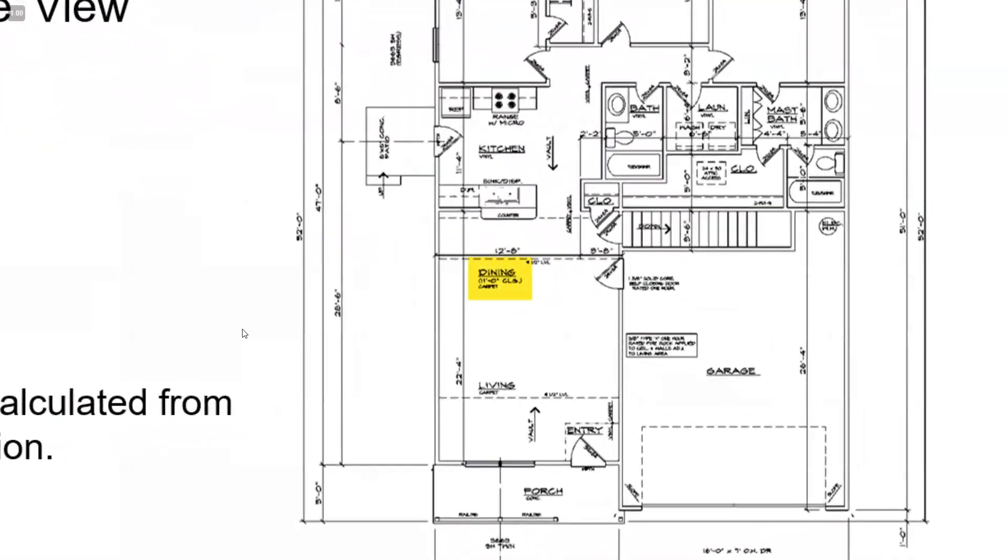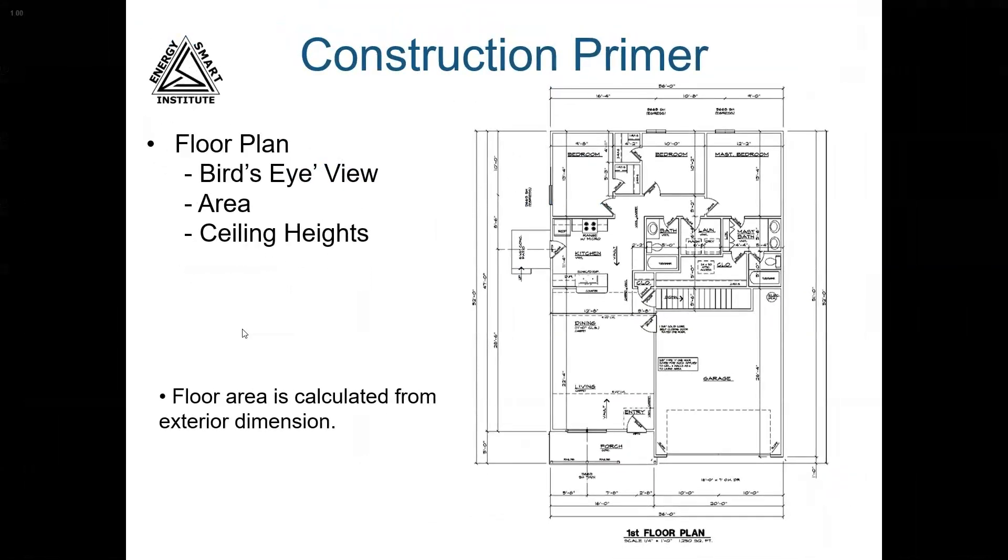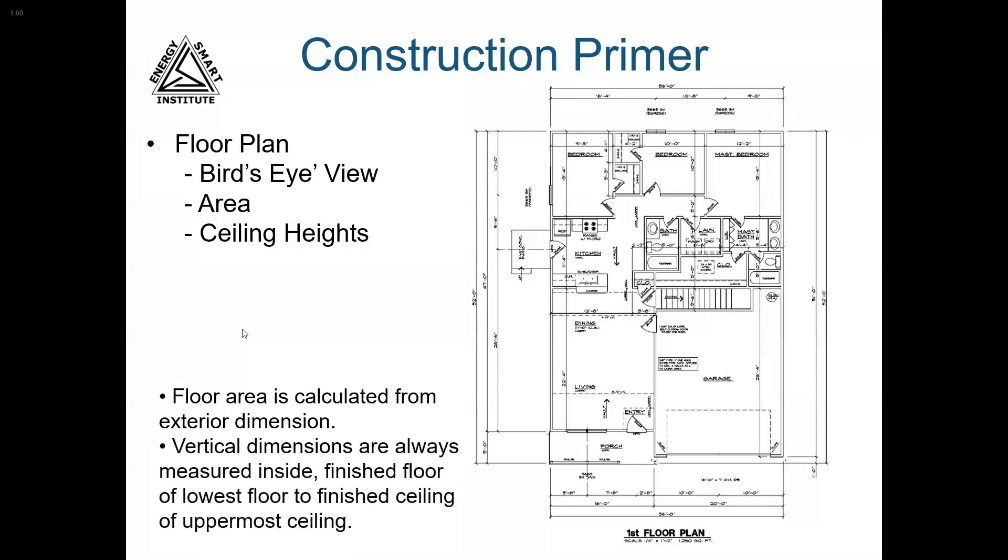The floor plans usually list ceiling heights as well, which you're going to need to calculate conditioned volume of the house. Volume is area multiplied by height. For HERS ratings, the height is always measured from the inside of the structure, from the top of the finished floor of the lowest conditioned space floor, to the finished ceiling plane of the uppermost conditioned ceiling. This includes the height of the interior floor joists between the levels of the home.